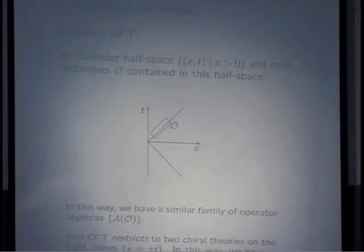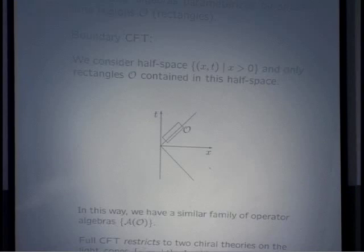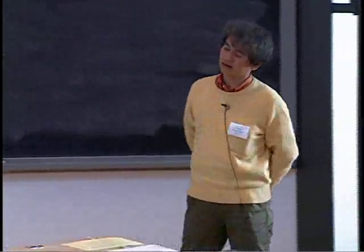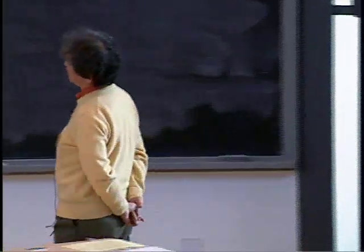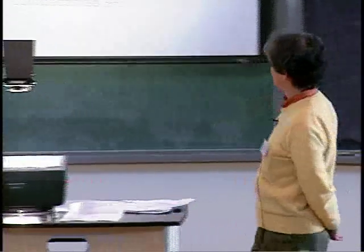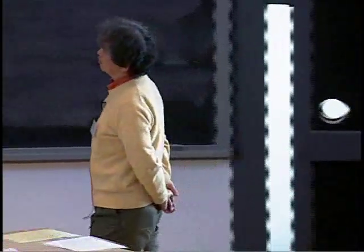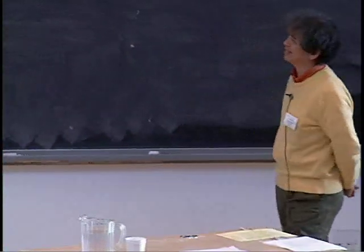With slight differences, we can also handle the boundary CFT in essentially the same way. In boundary CFT, the space part X is just half of the entire space — we take only the positive part of the real line for the X variable. We again consider rectangles, but now rectangles are in this half space. Similarly we have a family of von Neumann algebras A(O) parametrized by rectangles on this half space. Basically these two are very similar, essentially the same, and in this unified way we can deal with full and boundary conformal field theories.